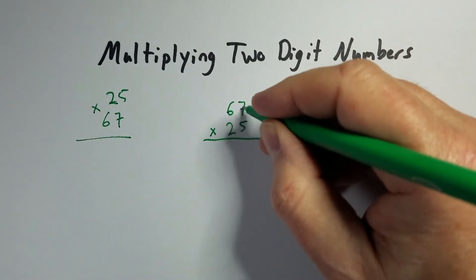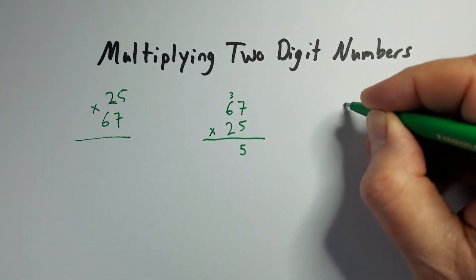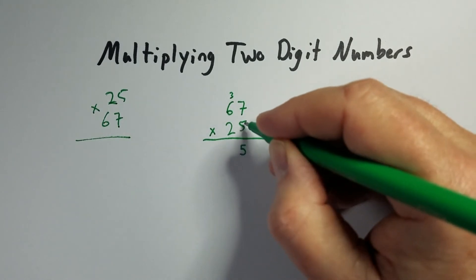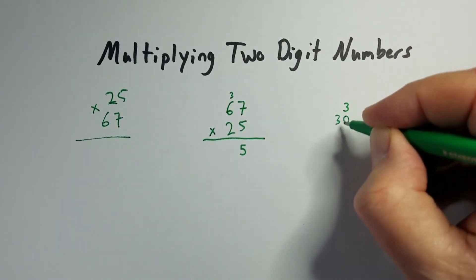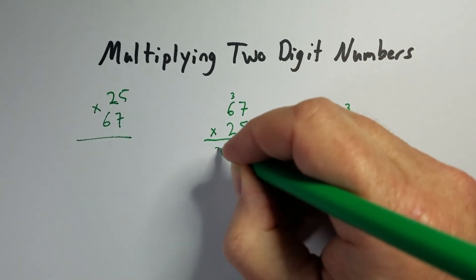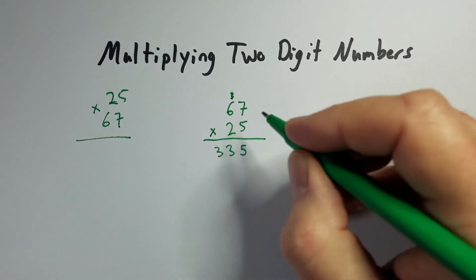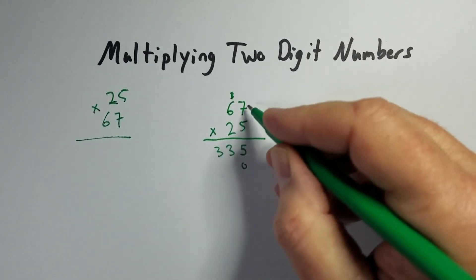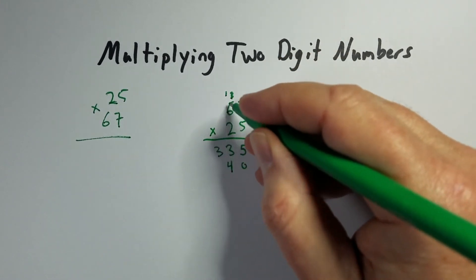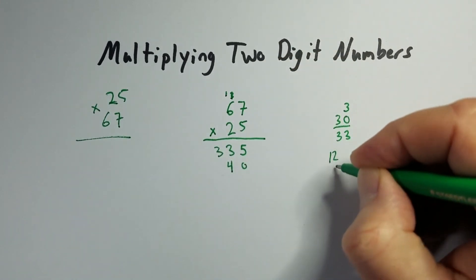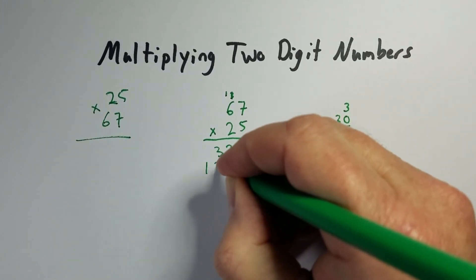So 5 times 7 is 35. So 5 comes down, 3 goes up. Keep that 3 over here. 5 times 6 is 30. We already have a 3, so that makes 33. 2 times 7 is 14. Don't forget the placeholder. So 4. Carry that one up. 2 times 6 is 12. But we already have that one, so now it's 13 that we're going to actually write down here.